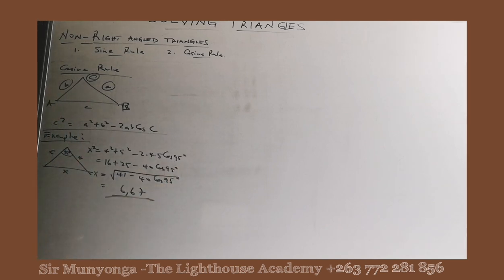So what about if the 3 items which are given are the 3 sides? Then you will be required to find the angle. So for the angle we change the subject of the formula.